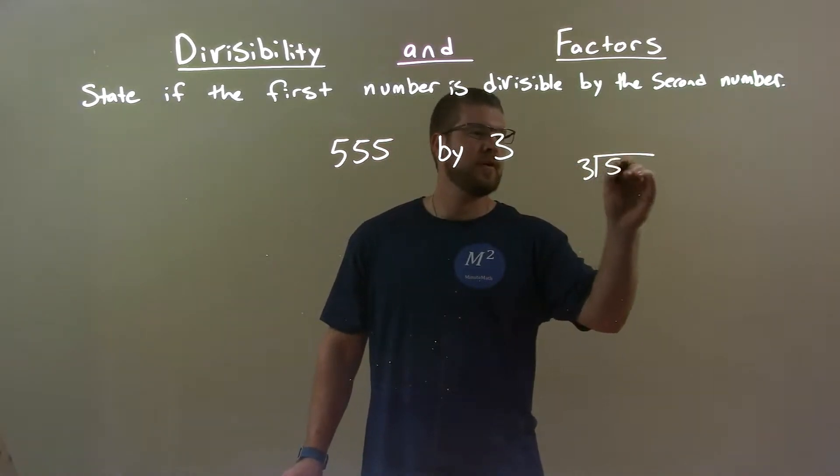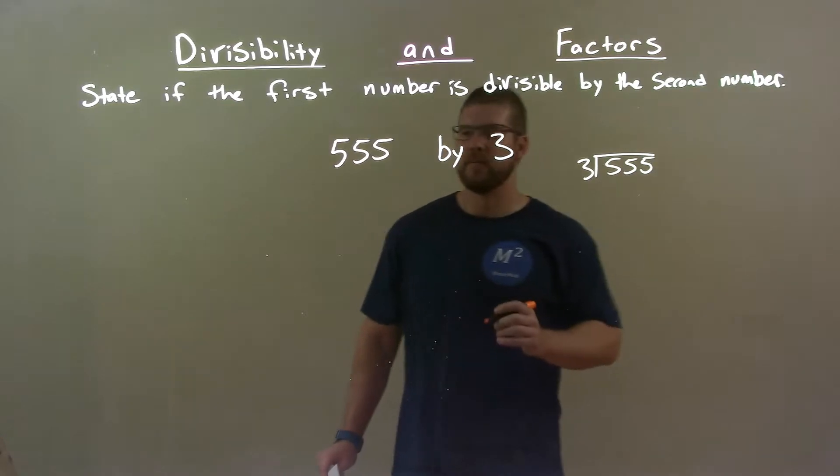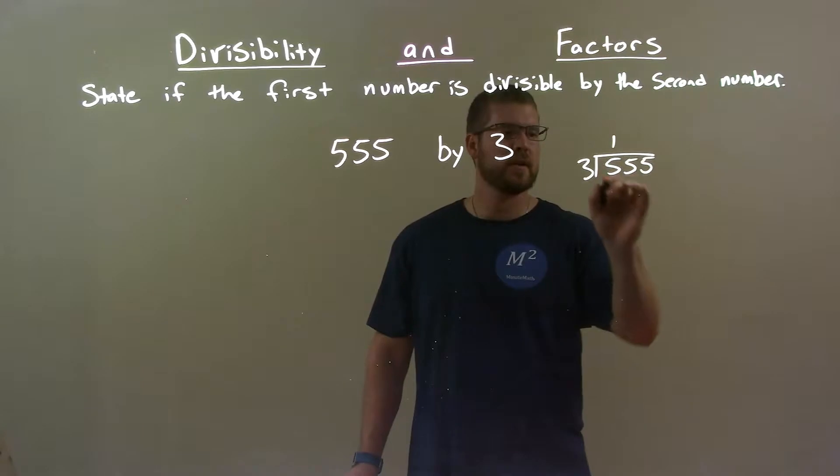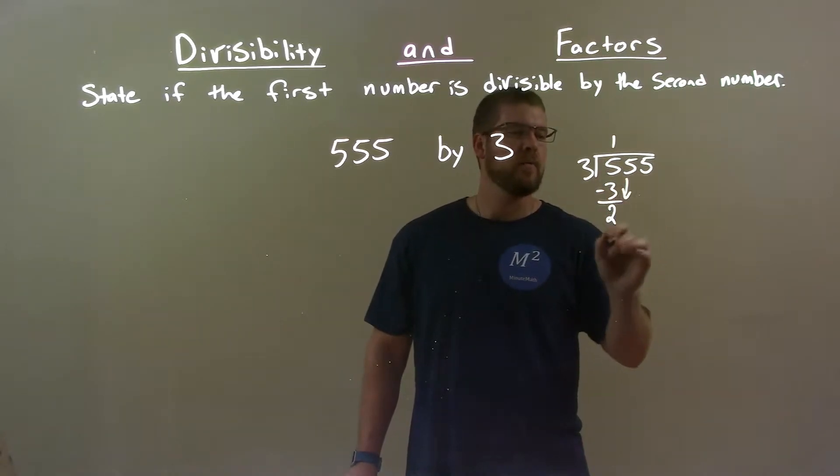3 into 555. Does 3 go into 5? 3 goes into 5 one time. 1 times 3 is 3. Subtract, we get a 2. Bring down the 5.